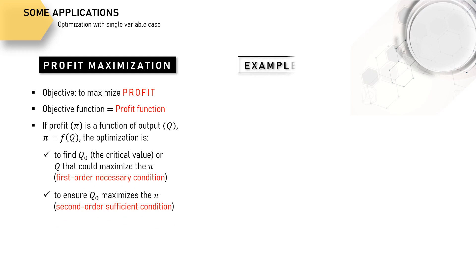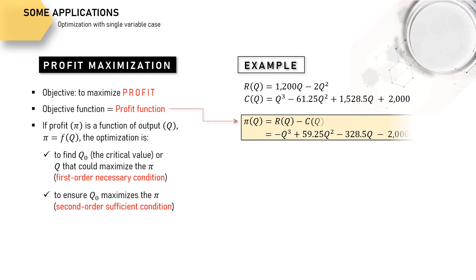Now let's take a look at the example. Given the following revenue and cost function, the objective function is this. It is a single variable case of optimization since our objective π only has one choice variable Q.